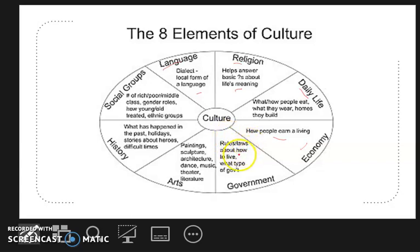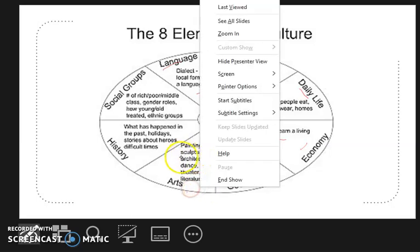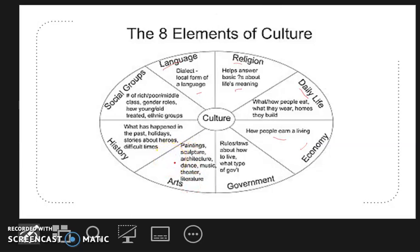Government: the rules, laws about how to live, and what type of government in that certain area. Arts: paintings, culture, architecture, dance, music, theater, literature. History: what has happened in the past, holiday stories about heroes, difficult times.